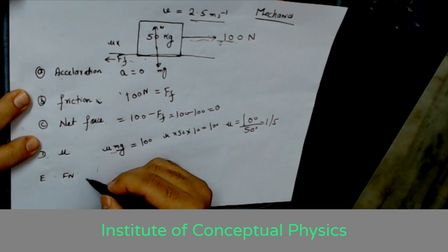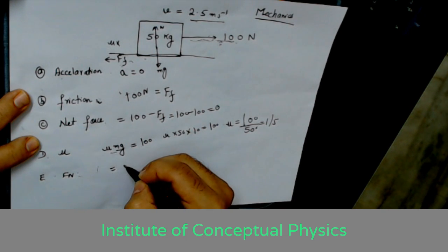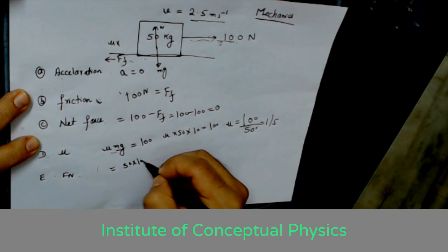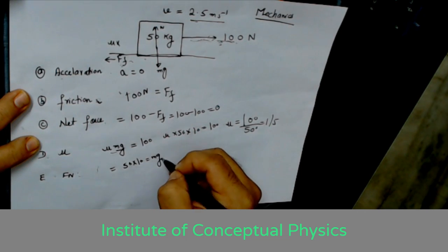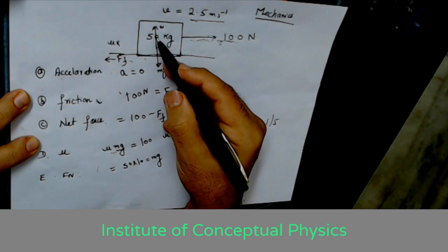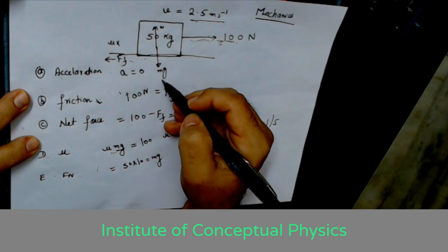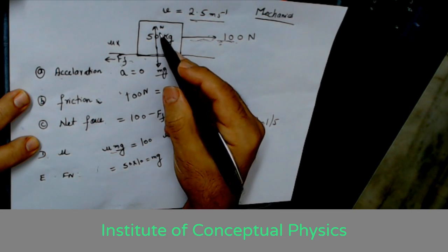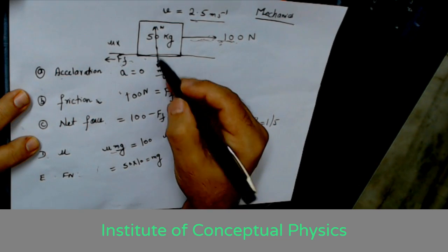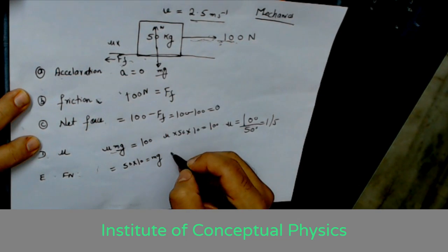And the force of normal reaction is just equal to mg, which is 50 into 10. So the mass of the body is pushing the earth downward and the earth is giving a normal reaction equal to the force with which the body is pushing the earth. So that is equal to 500 newtons.